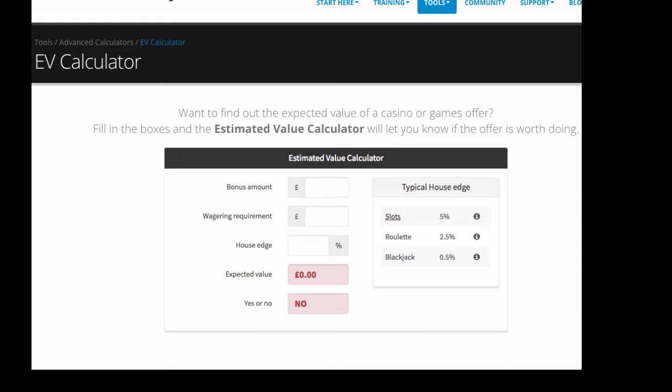It was a games offer on Rainbow Riches - stake £50 on the slot, get a free £10 bonus which you could then use on any slot of your choice with just a one-time wagering requirement. We actually did quite well out of it, scooped £64 profit for about 10 minutes' work. So it worked out very well for us.